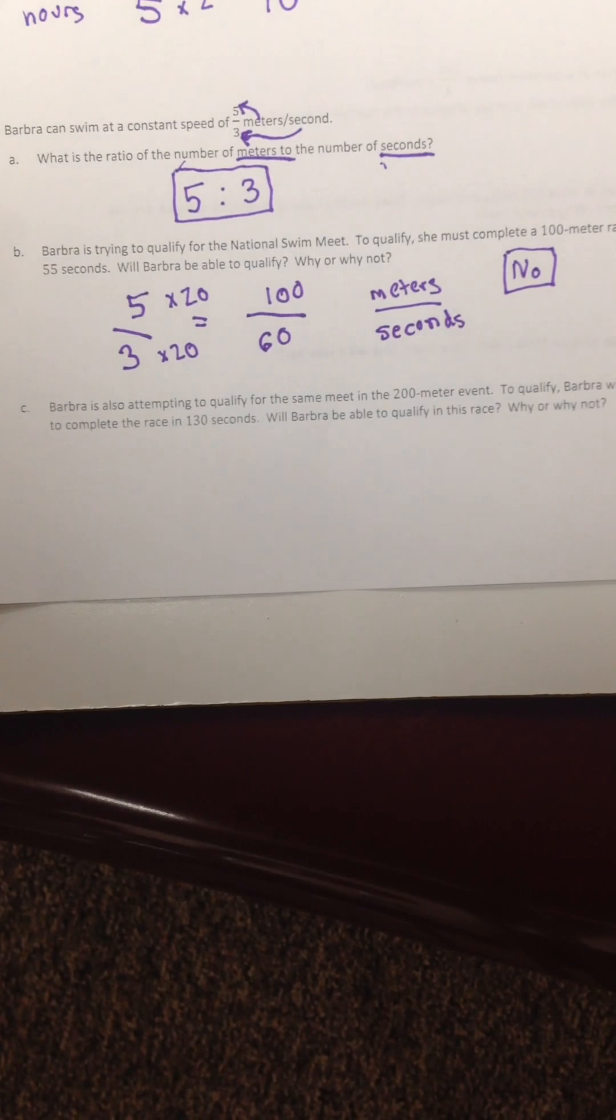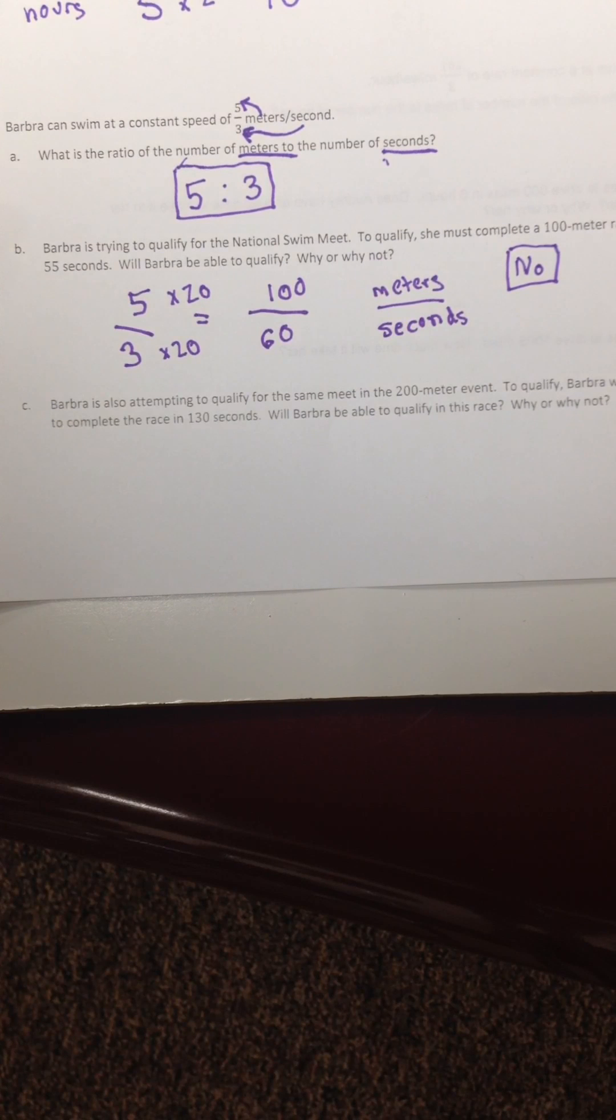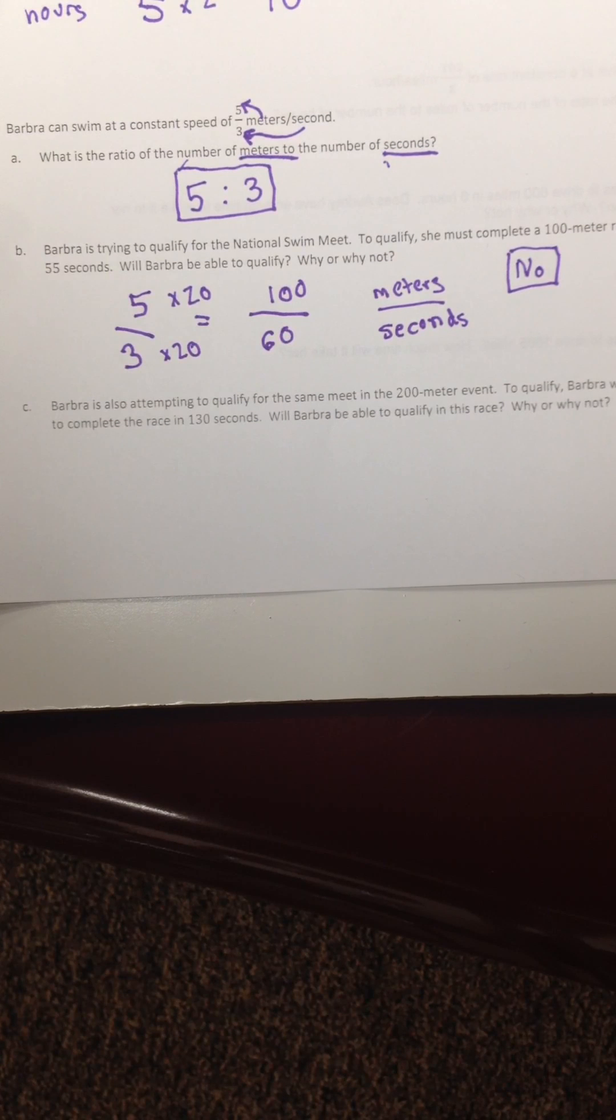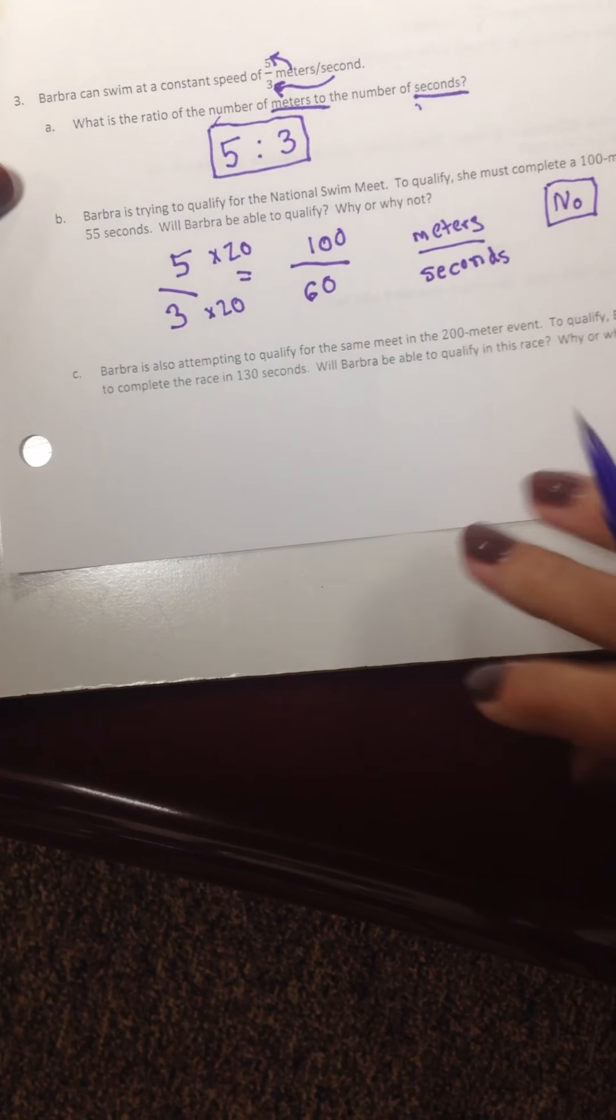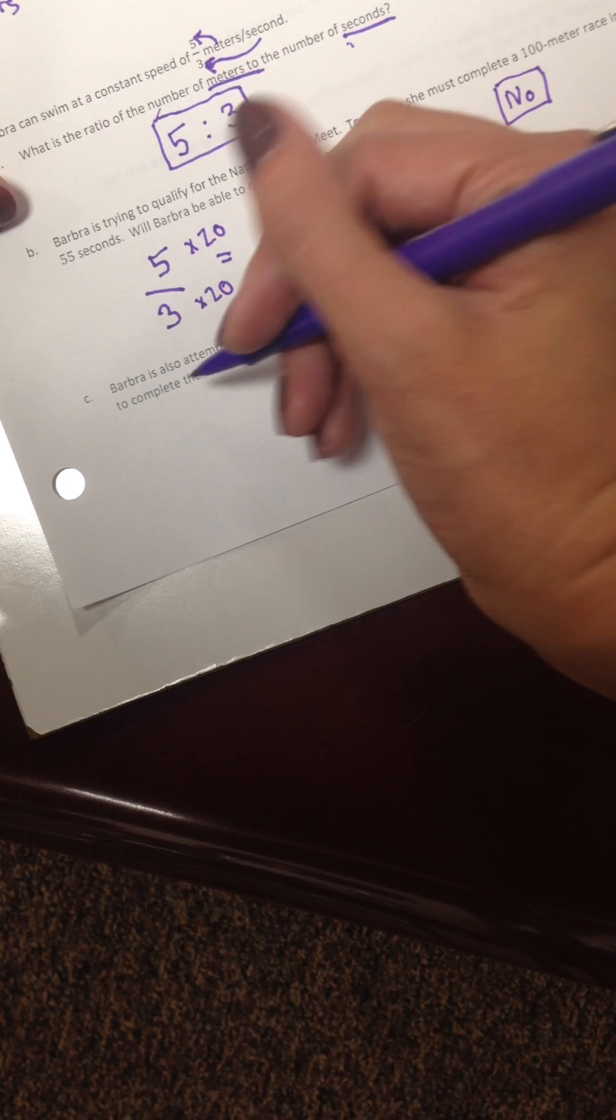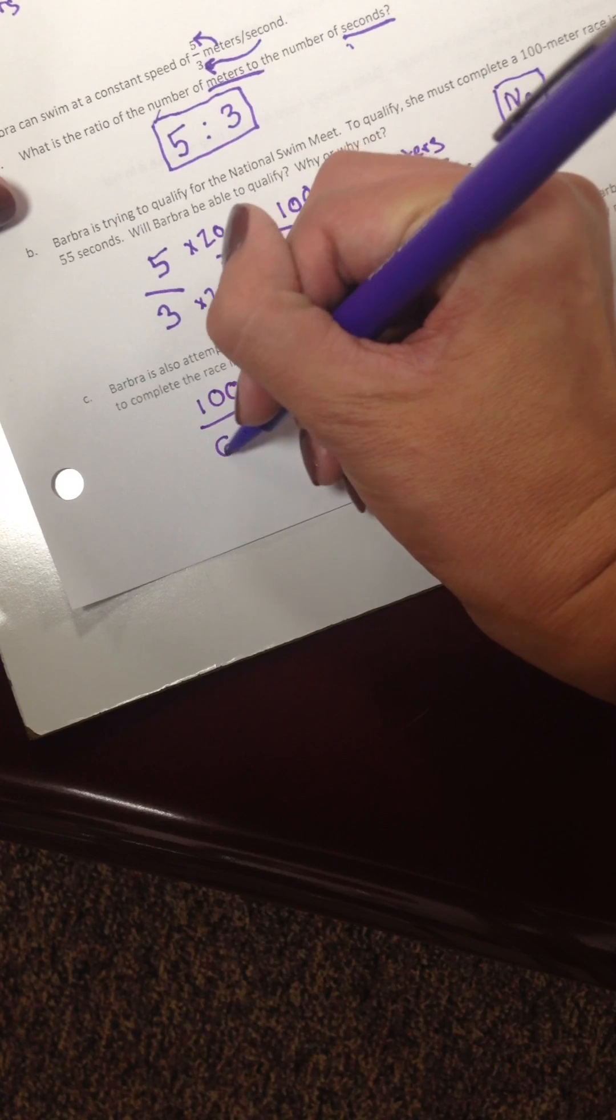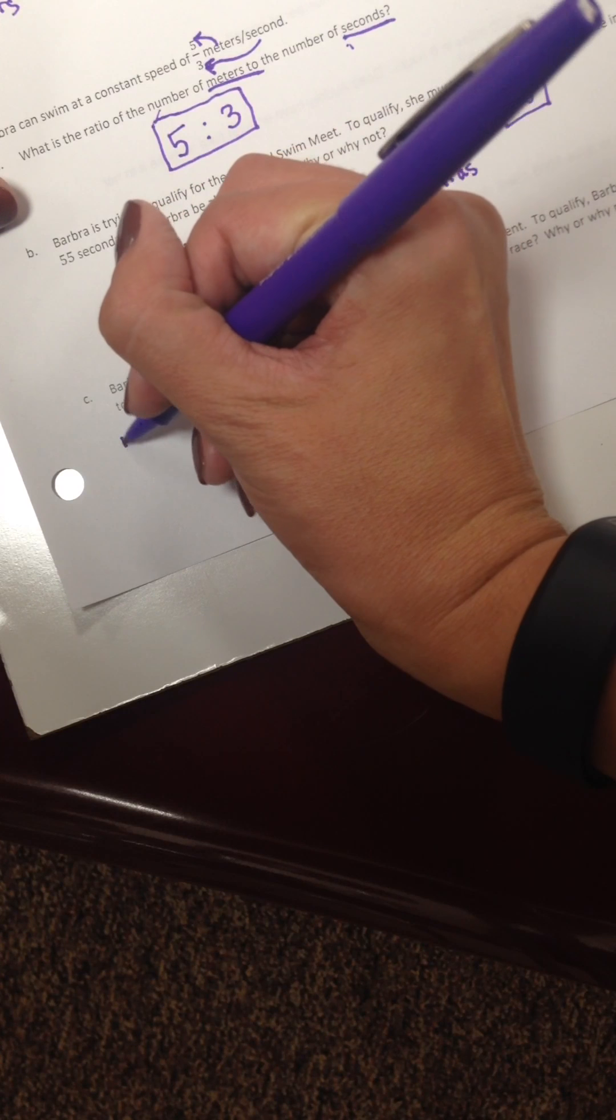Barbara is also attempting to qualify for the same meet in a 200 meter event. To qualify, Barbara would have to complete the race in 130 seconds. Will Barbara be able to qualify for the race? Why or why not? So we can do the same sort of thing here. We know that it takes her 100 meters in 60 seconds. So we've got 100 over 60. That's her meters over seconds.